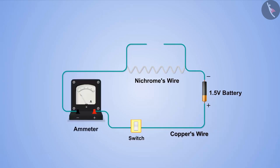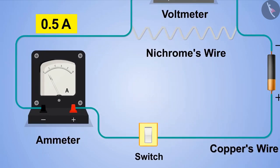We know that the ammeter is connected in series and voltmeter in parallel. After the circuit is complete, turn on the switch and write down the readings of ammeter and voltmeter in the table.